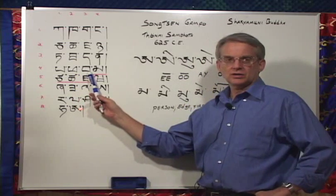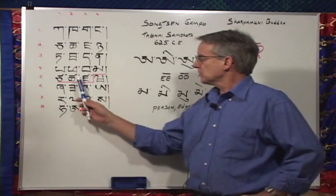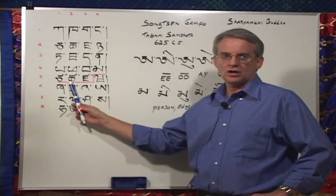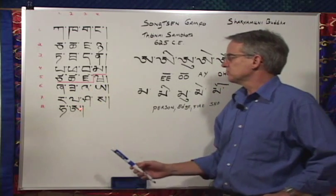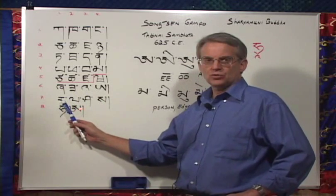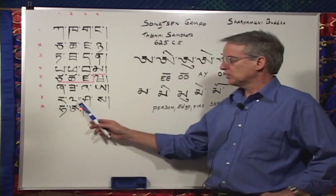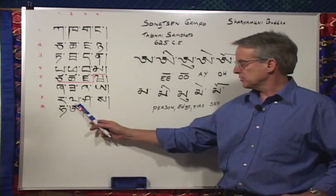Ba, cow. Ma, mother. Sa, hot. Wa, fox. Ra, goat. La, to, at, in, of, et cetera, and mountain pass.